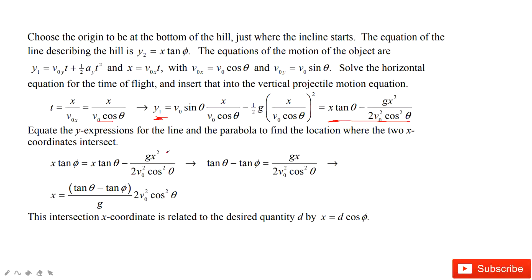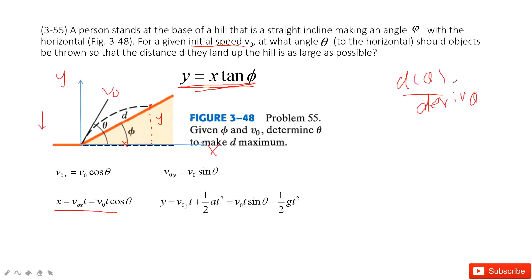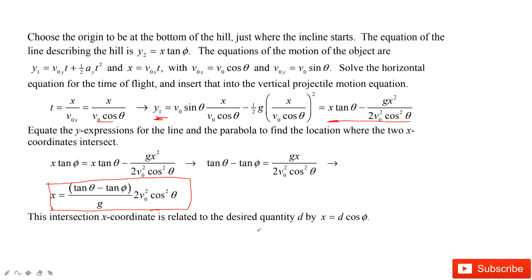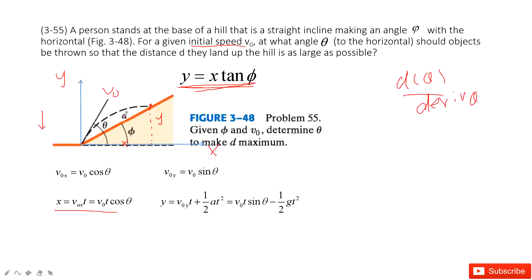Solving this equation, we get x as a function of theta. But our purpose is to get the function d with theta. So we replace x with d, because we know x equals d cosine phi — since d is the distance up the slope at angle phi, x is d cosine phi.